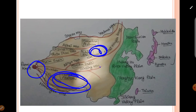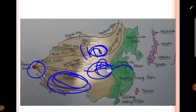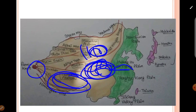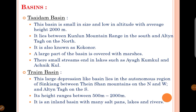Next is the Ordos-Loess Plateau. The winds from the Gobi and Mongolian plateaus carry fine dust particles of yellow color and deposit them in the Hwangho River Valley region. That is why the Hwangho River is yellow — because of the yellow-colored dust particle sand deposits. This yellow deposit is called loess. Therefore, this plateau is called the Ordos-Loess Plateau. It is located in the great bend of the Hwangho River and is made of loess deposition from the Gobi and Mongolian plateaus.